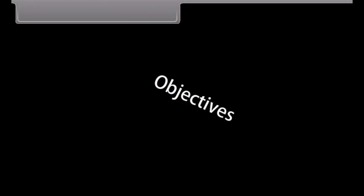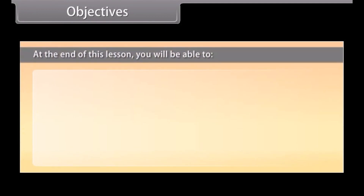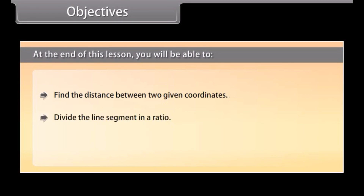Objectives: At the end of this lesson, you will be able to find the distance between two given coordinates, divide the line segment in a ratio, and find the area of a triangle when its vertices are given.